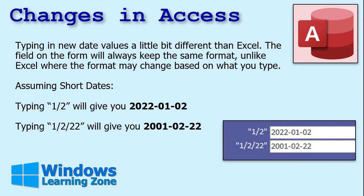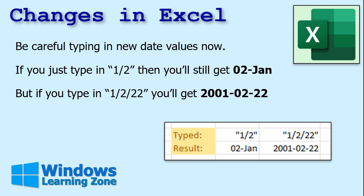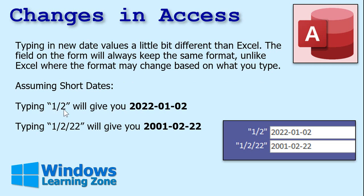Typing in new date values in Access is going to be a little different from Excel. The field on the form will always keep the same format, unlike Excel where the format can change based on what you type. In Access, if you type in 1/2 it will display in the short date format — the value is the same, but what's displayed is still the ISO short date Access has set. Access is a lot more structured and rigid whereas Excel lets you change things more easily. And if you type in 1/2/22, same issue — you're going to get 1/2/22 interpreted in that new format.